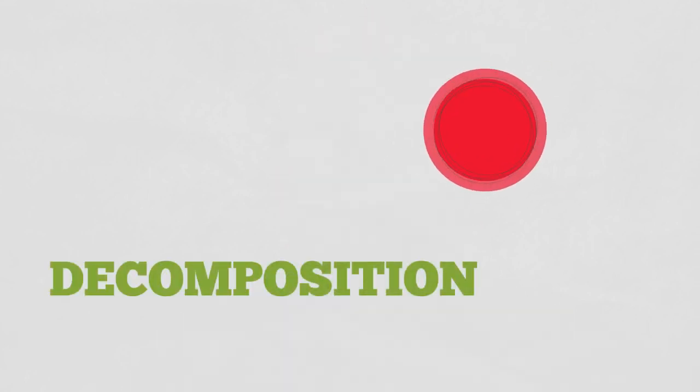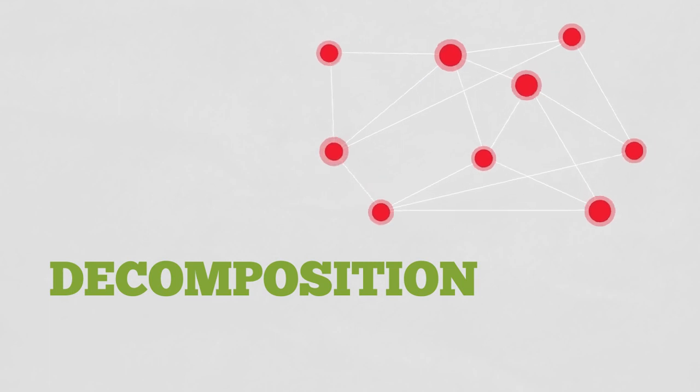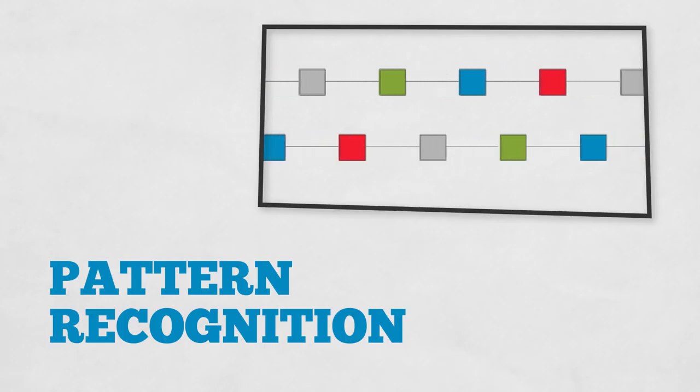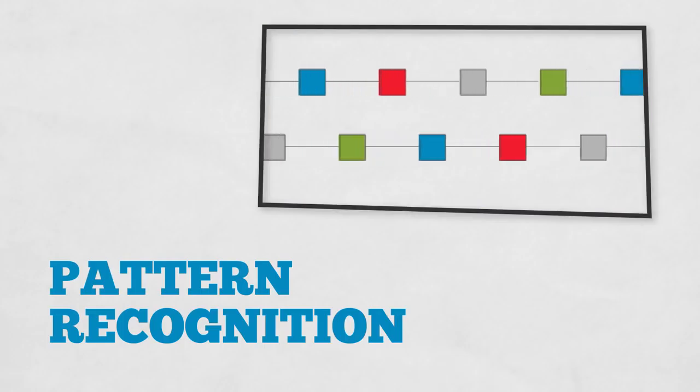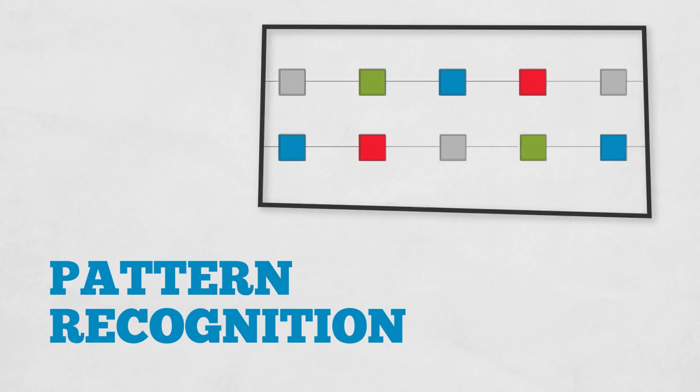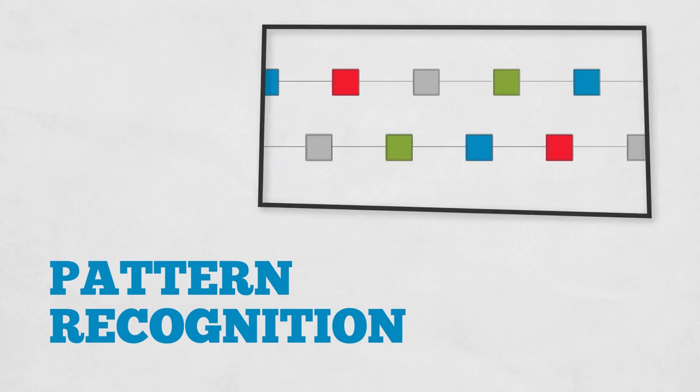One is decomposition, breaking something down and figuring out what all the parts are and how you might divide up a task. And then there's pattern recognition, which is finding similarities and differences between these parts in order to make predictions.